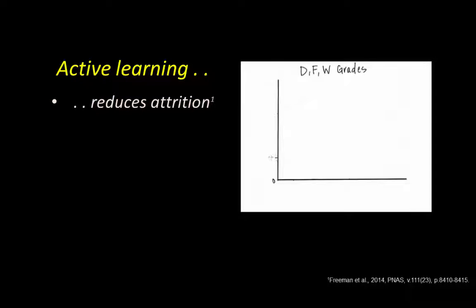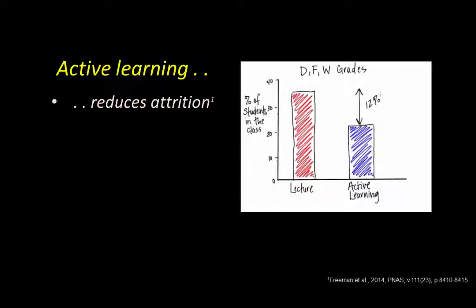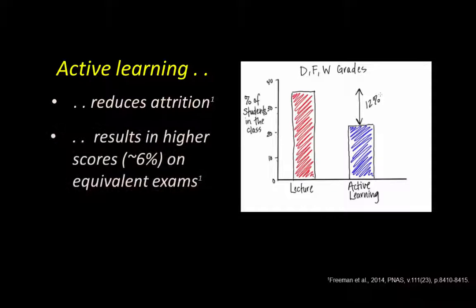Research shows that active learning improves student performance. For example, researchers analyzed dozens of studies of student learning in science, math, and engineering courses and found that active learning strategies reduce attrition. Fewer students earn Ds and Fs or withdraw from the classes when instructors teach this way. Further, comparison with students in traditional lecture classes shows that active learning can improve average exam scores by more than half a letter grade.